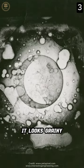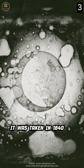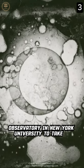It looks grainy, fake, and unreal, but this is actually the first photograph of the moon. It was taken in 1840 by John W. Draper who climbed up to his rooftop observatory in New York University to take it.